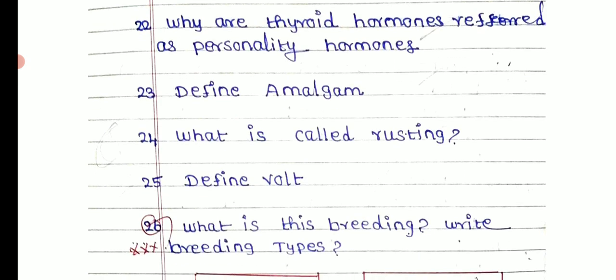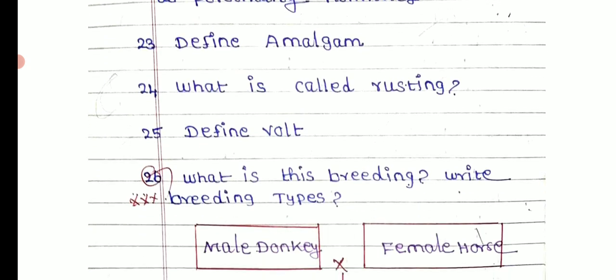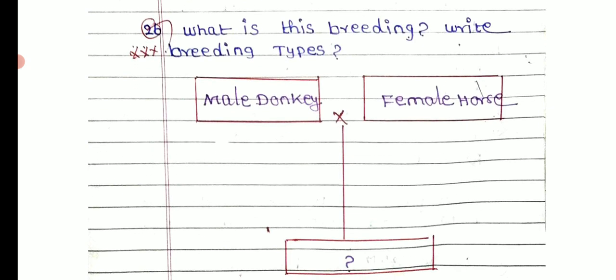What is called resting potential? Define volt. What is breeding? Write the breeding types — male donkey and female horse cross.